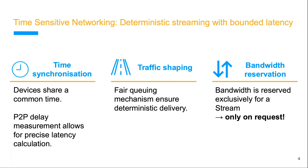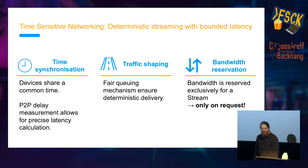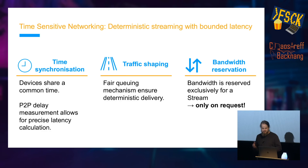There are three main components to TSN. The first is time synchronization: all devices in the network — senders, receivers, and all switches in between — have a common understanding of time. The technology also measures the transmission delay between each port, so we can precisely say how long transmission takes. The second part is traffic shaping with fair queuing mechanisms for deterministic delivery. The third is bandwidth reservation: when a stream is established, bandwidth is reserved exclusively for that stream and cannot be used for anything else. When no streams are active, the bandwidth is available for everything else.